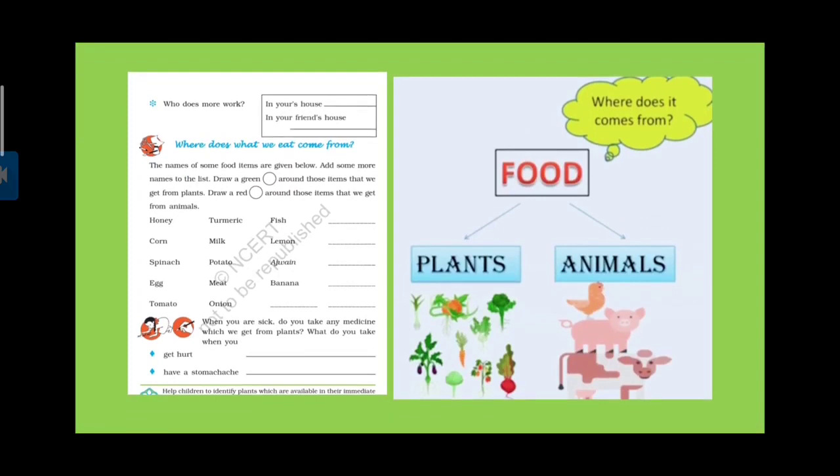Who does more work? Food does more work. Where does it come from? Food. There are two sources of food, plants and animals. We get food items from plant and animals. Most of the food items we get from plants.